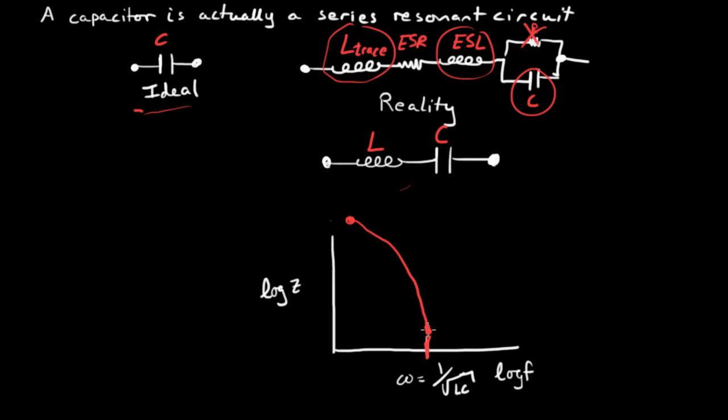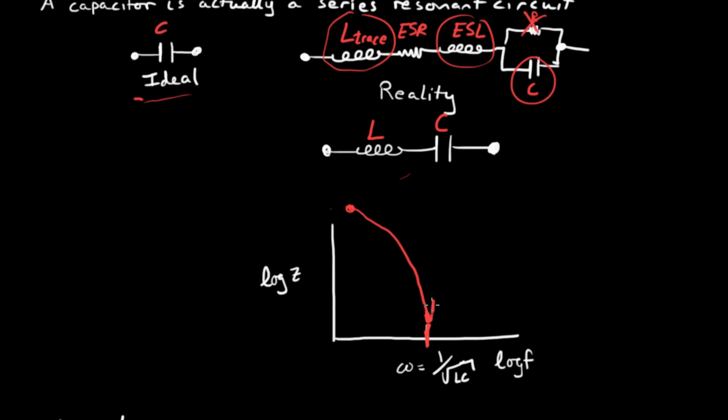But then something interesting happens. Above the resonant frequency, the capacitor is basically opened up. It's passing all frequencies above that. But the inductor is not. Its impedance is j omega L. And so we're going to see the impedance of the capacitor actually start to rise with frequency.